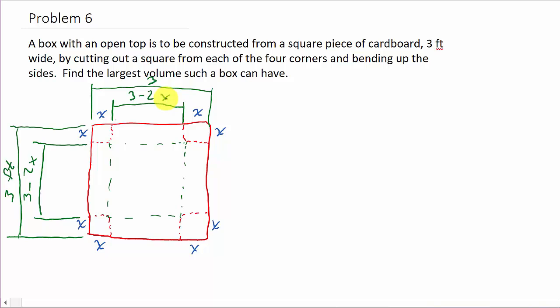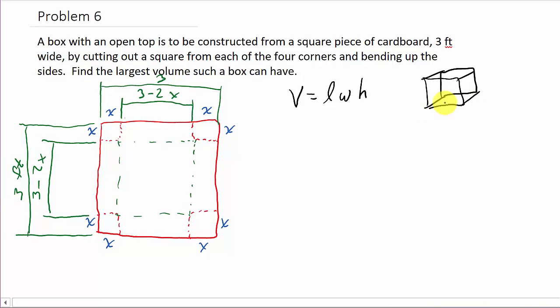I know that's three feet. I know the distance from here to here is three minus two x. Now, we want to find a box with largest volume. So what is the volume of a box? Well, the volume is the length times the width times the height. If you have a box here, this could be the length of the box, the width, and then the height. Multiply those together.